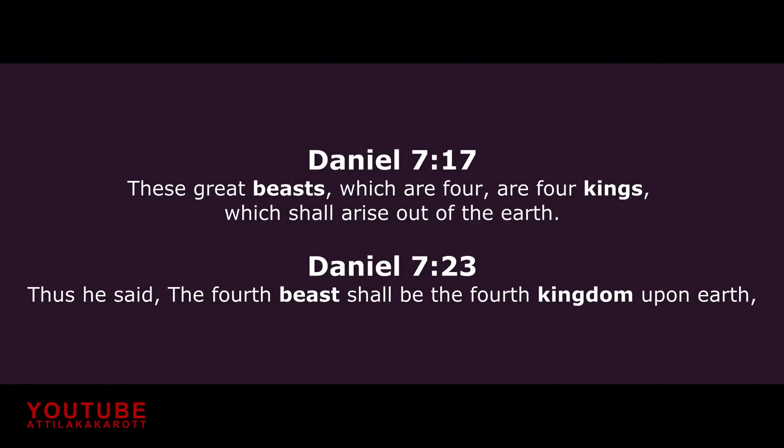A beast is a symbol for a kingdom, a king, or a political system. In Daniel 7, we find four beasts, and they are the kings, kingdoms, or political systems of the world.